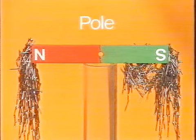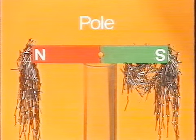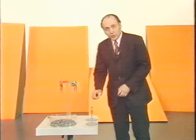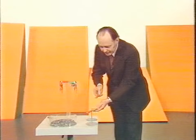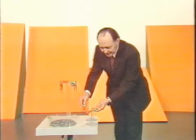Diese Stellen besonders starker Anziehungskraft nennen wir Pole. Wir unterscheiden Nordpol und Südpol. Magnetpole üben aufeinander Kräfte aus, und zwar stoßen sich gleichartige Pole gegenseitig ab.